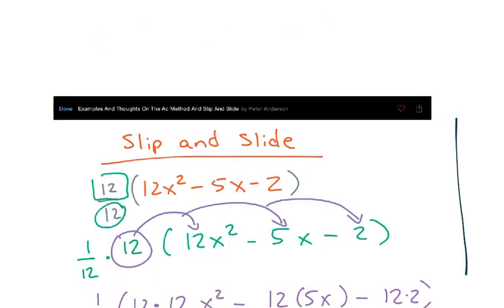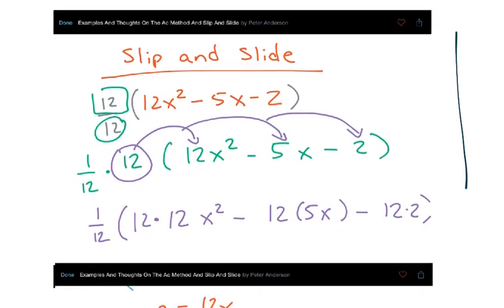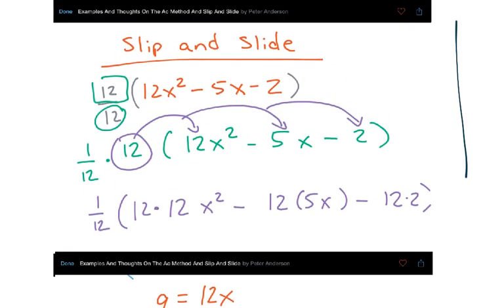So recall in the previous video, I used a formal example, I used a specific example. And in my specific example, I started off by writing 1 as 12 over 12. I was multiplying the entire expression by 1, which is 12 over 12. And the reason why I chose 12 is because it's the value in front.